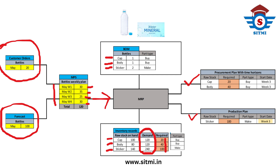In the procurement plan, since we have to purchase cap and body from external suppliers, the procurement plan will include cap for 20 quantity and body for 40 quantity. It will also include the start date to release the purchase order based on the lead time of each item and required demand date. On the other side, a production plan will also be prepared for the stickers — we will need 100 stickers, and it will include the start date of the production plan.